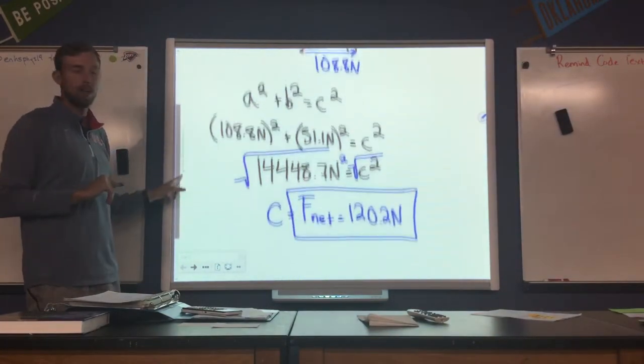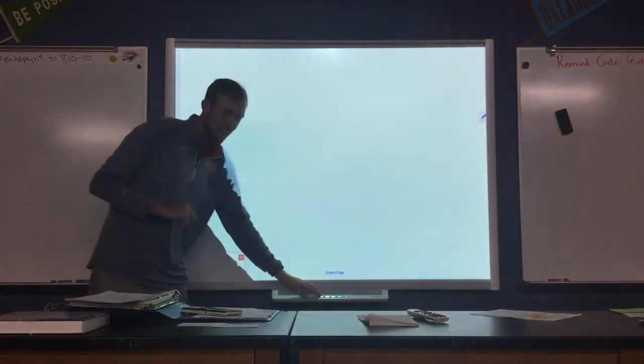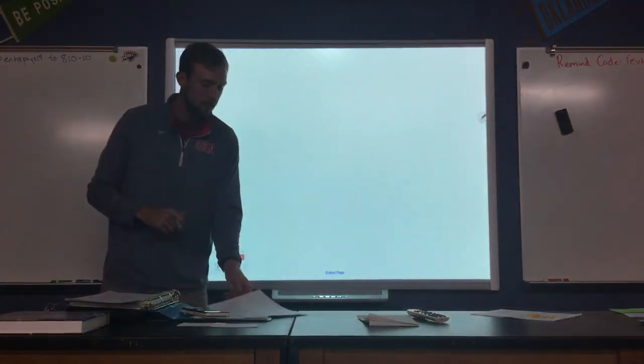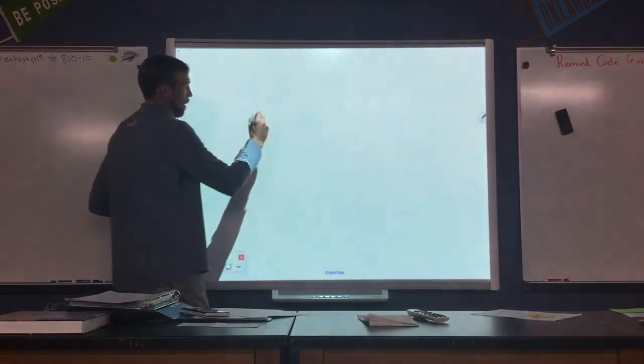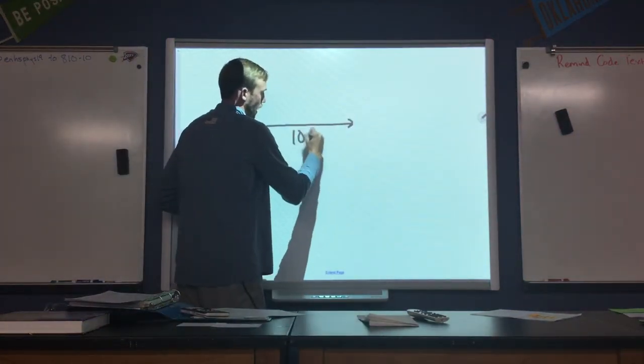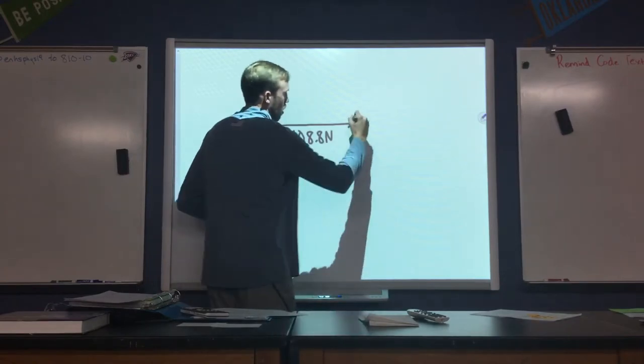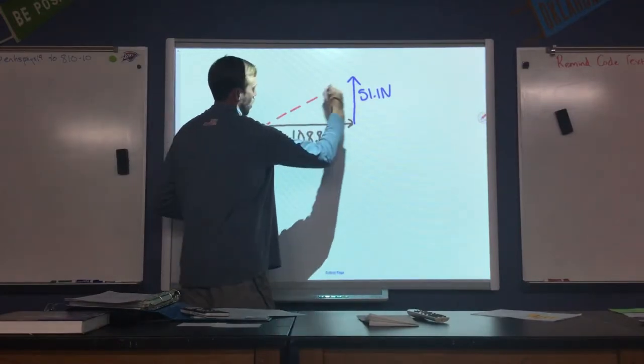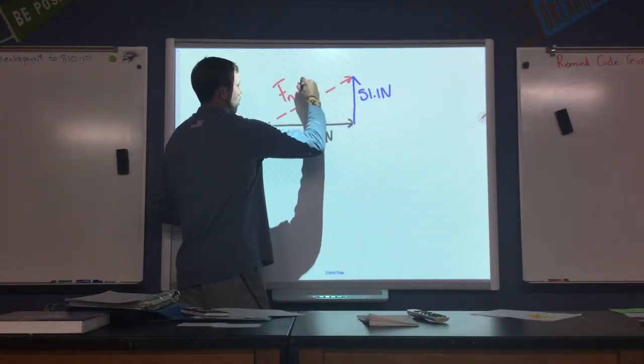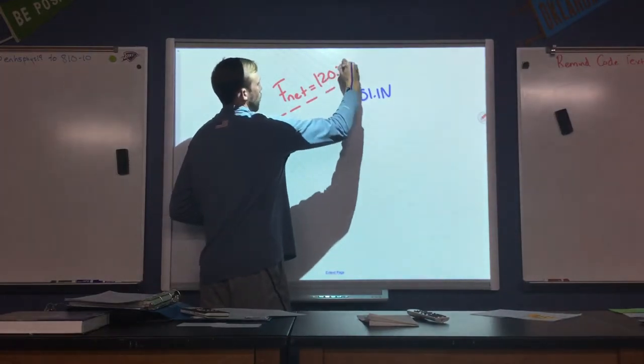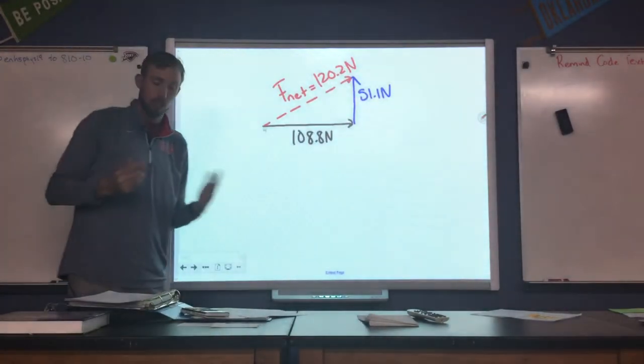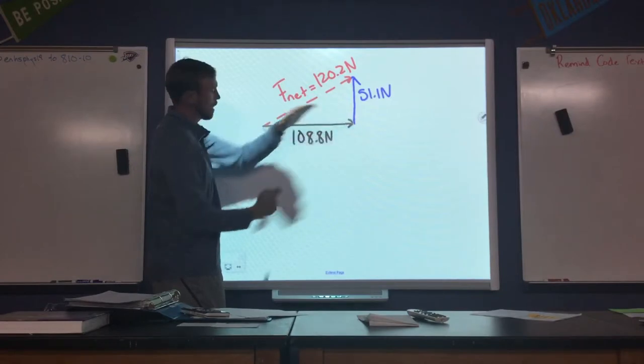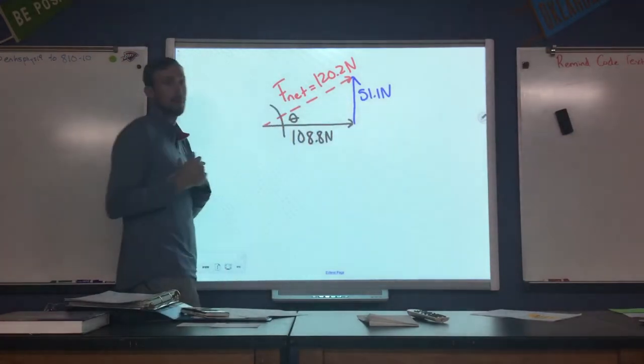Now this is part one of, as I mentioned, a two-part question. Part two asks us this: What is the direction of the resultant force measured from east? So here's what we now know. We know that we have a force of 108.8 newtons east, 51.1 newtons north, and we've now found our net or overall resulting force to be 120.2 newtons. It's now asking us for the direction. It says measured from east. That means we're going to find the angle measured from the east direction. So we're going to find this angle right in here. That will be our theta.